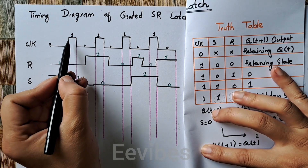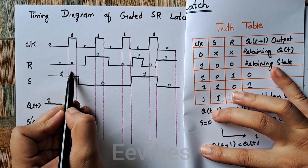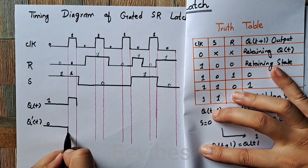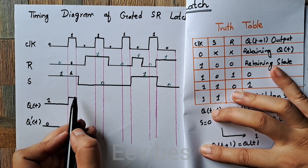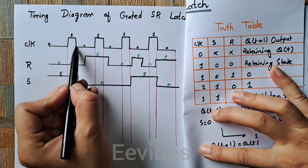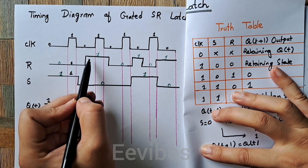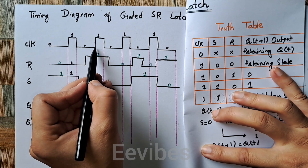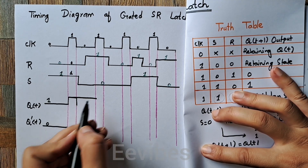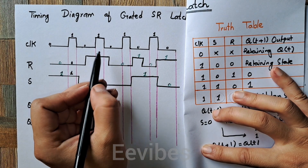When the clock signal becomes one, R=0 and S=1, which sets the output — Q(t+1) equals one while Q-complement is zero. Then when the clock switches back to zero, the flip-flop should not introduce changes and should retain its previous values. So for that entire time period, output Q remains one in the retaining state, while Q-complement remains zero.